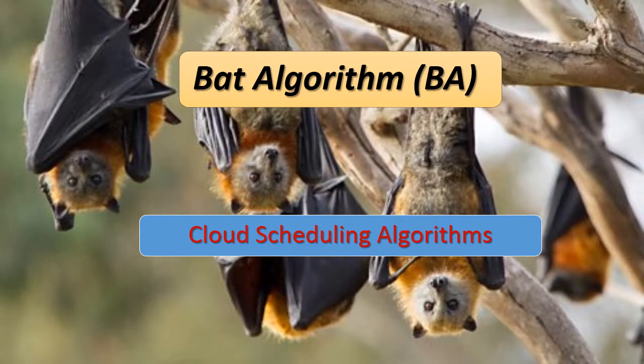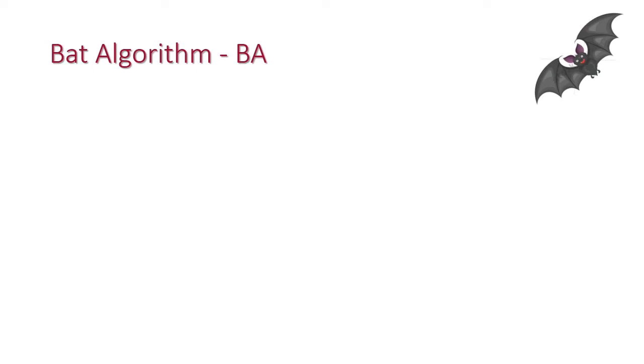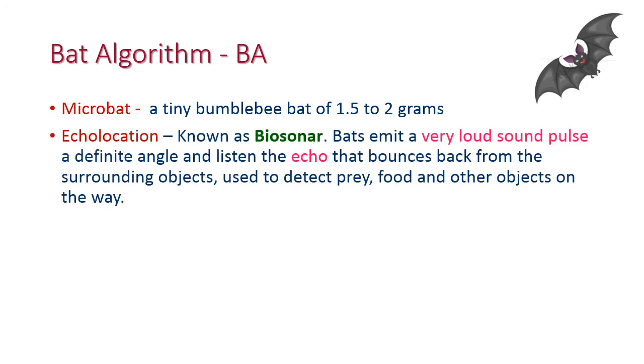Before discussing the algorithm, we need to understand two things: first is microbat, and second is echolocation. First, microbats: there are many different species of bats in the environment, but here in this algorithm we are using microbats, which are very tiny bumblebee bats of size 1.5 to 2 grams.